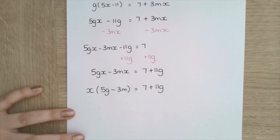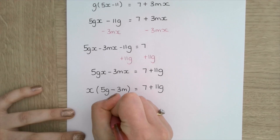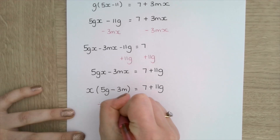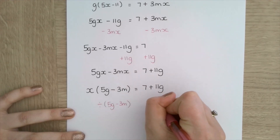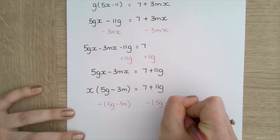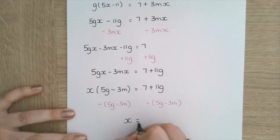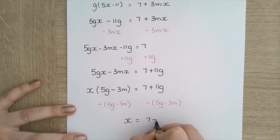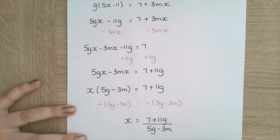And then I just need to divide by that whole bracket, giving me x is equal to 7 plus 11g all over 5g minus 3m.